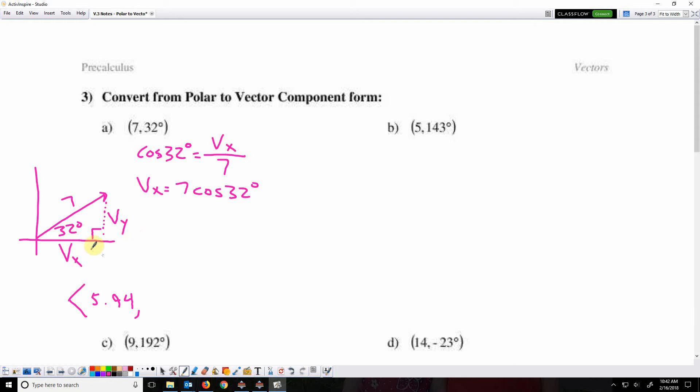For the y component, I've got opposite and hypotenuse, so I'm going to use sine. So sine 32 equals the vector's y component over the hypotenuse. So the vector's y component is 7 sine 32.